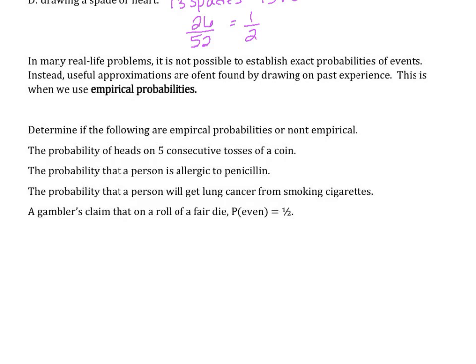In many real life problems, it is not possible to establish exact probabilities of events. Instead, useful approximations are often found by drawing on past experiences. This is when we use empirical probabilities, when we use past experiences. So determine if the following are empirical probabilities or not empirical.